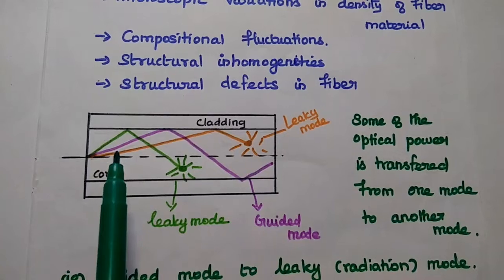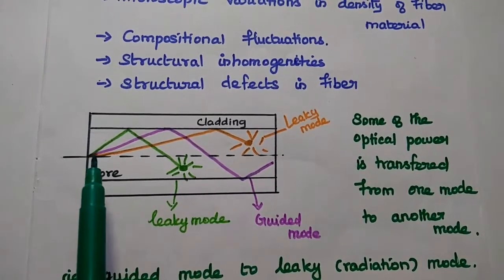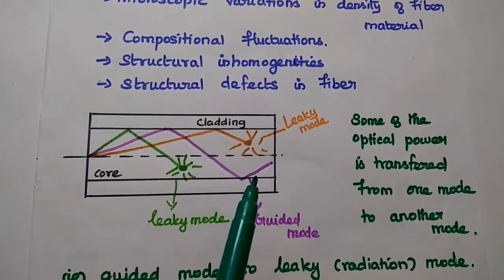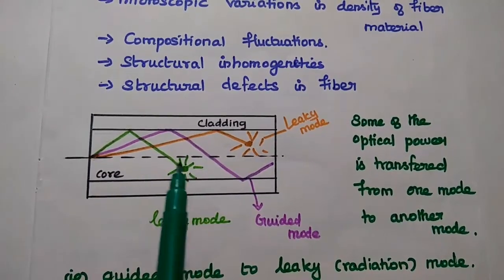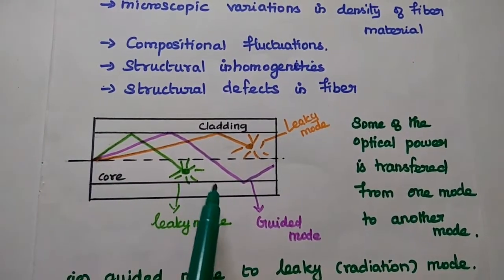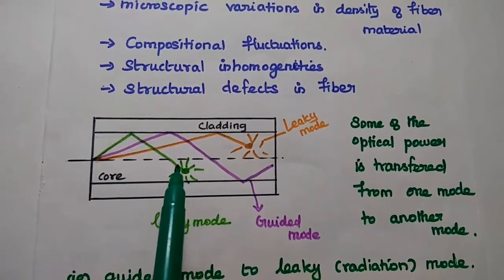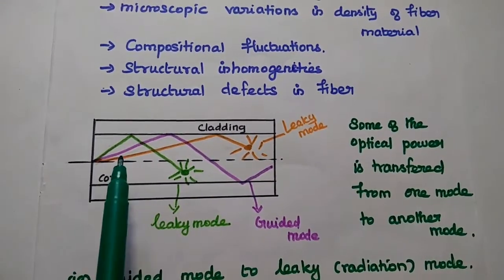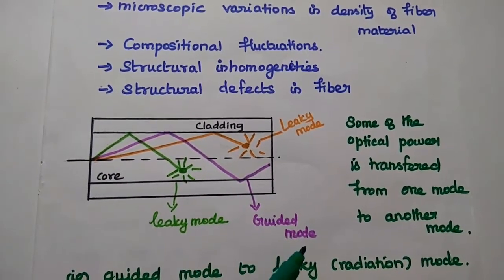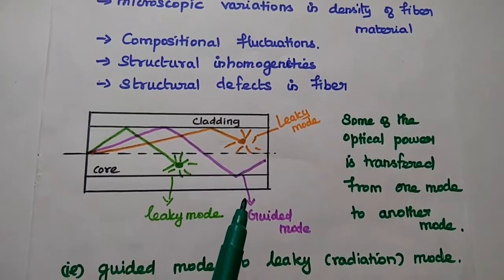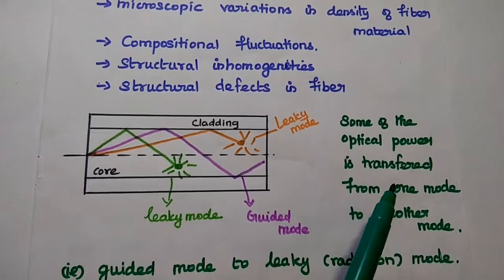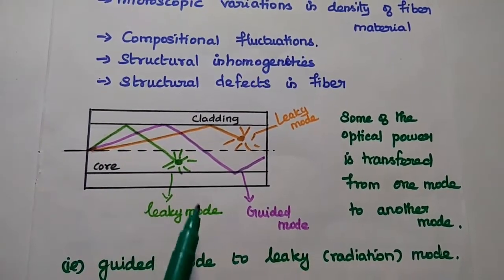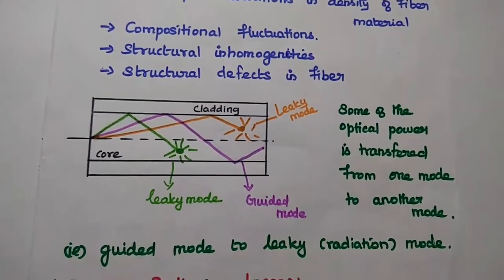When the light signal enters the fiber material, the light is guided along the core axis using the total internal reflection mechanism. But due to non-uniformities in the fiber cable, the light gets scattered in all directions — that mode is known as leaky mode. Normal wave propagation is known as guided mode. Due to these non-uniformities, some of the optical power is transferred from guided mode to leaky mode, which is also known as radiation mode.